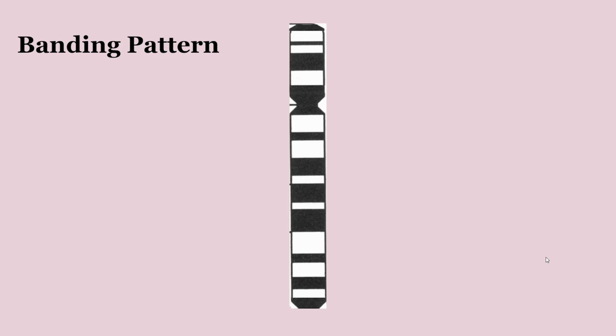In karyotypes, you can see this banding pattern on the chromosomes. This is created by the dye used to stain them. The darker bands indicate areas where there's a lot of DNA that's tightly packed, and these areas are called heterochromatin. They are mostly present in areas where there's not a lot of coding DNA, such as the telomeres and the centromere of each chromosome.